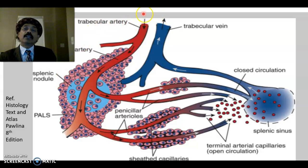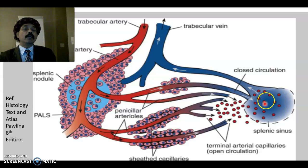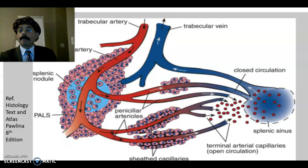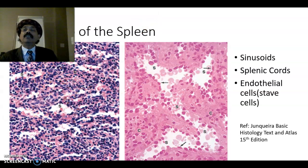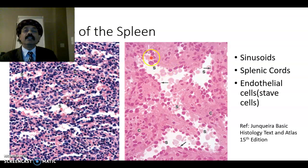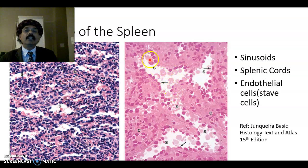The pathway is: splenic artery → trabecular artery → central artery, which opens into the splenic cord and ultimately goes to the splenic sinusoid or sinuses, returning back through the trabecular vein. In the red pulp, the sinusoid is lined by endothelial cells. The sinusoid contains all the components of the blood, including red blood cells.